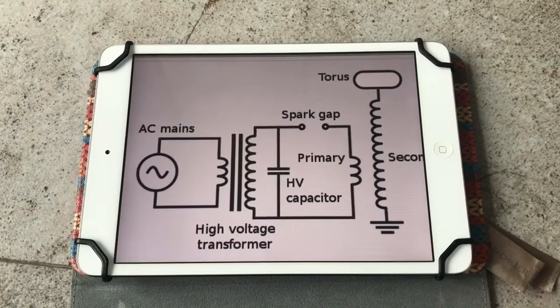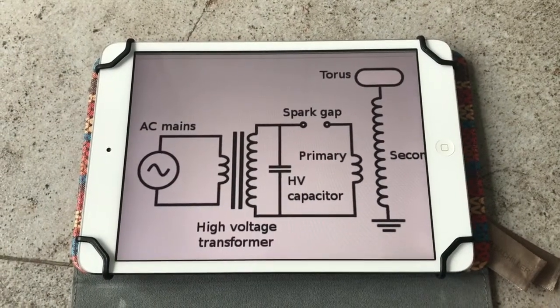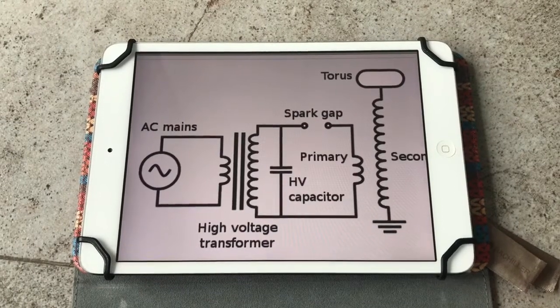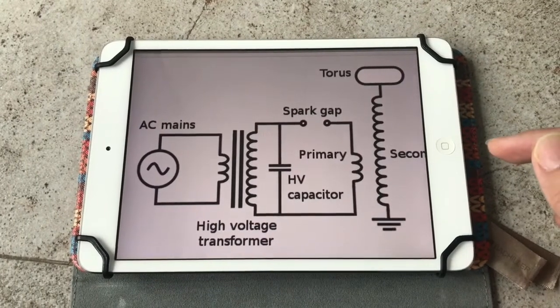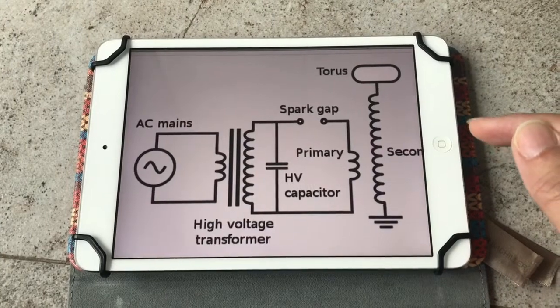Alright, here's the schematics of the DIY Tesla coil which I'm going to show you. The main difference you notice is that there's no NPN transistor which is used to oscillate the circuit.